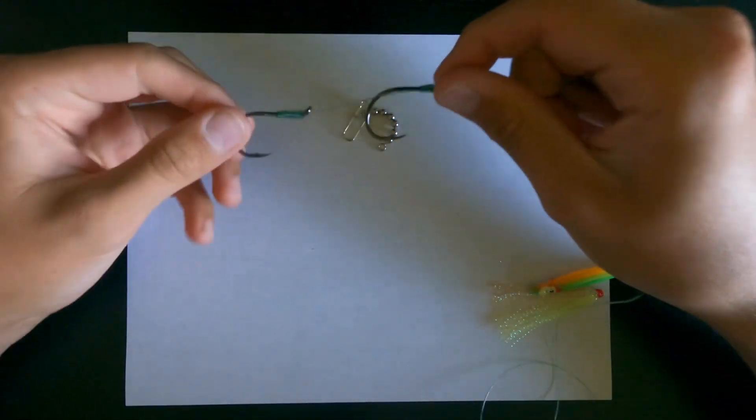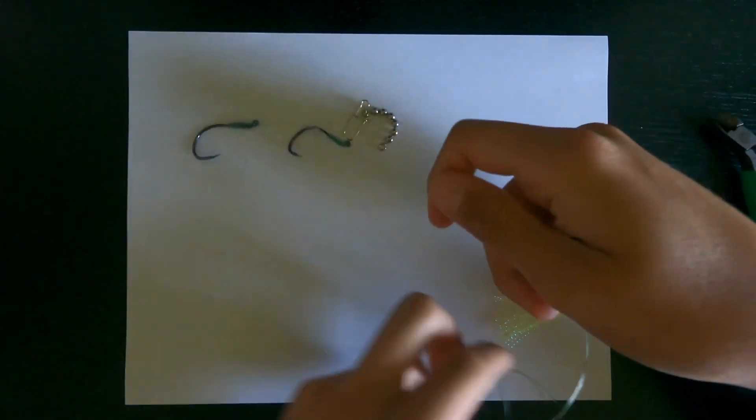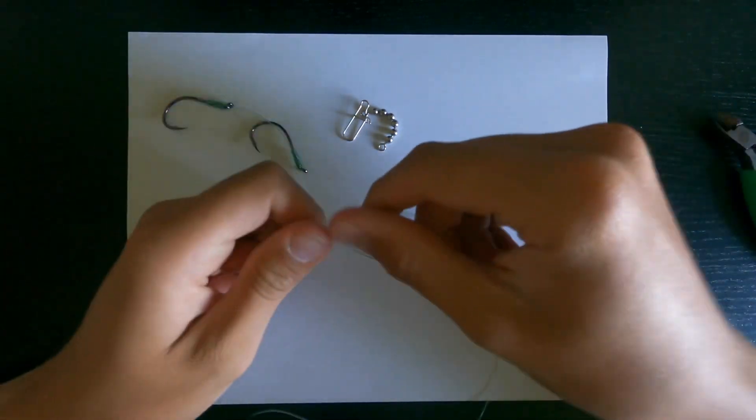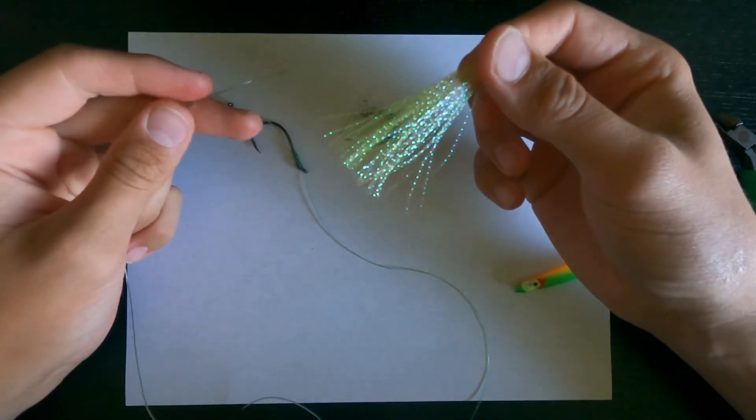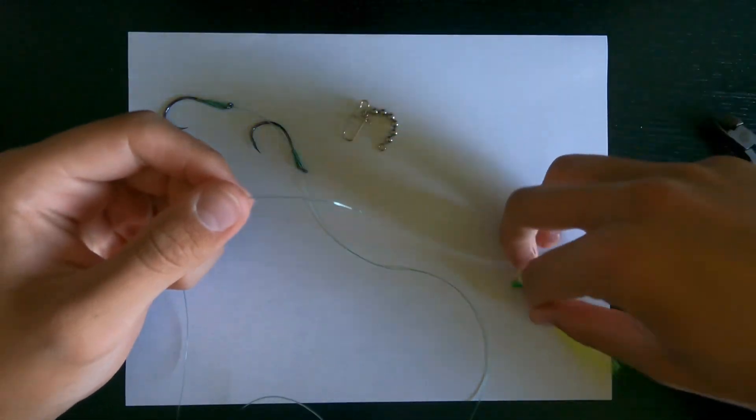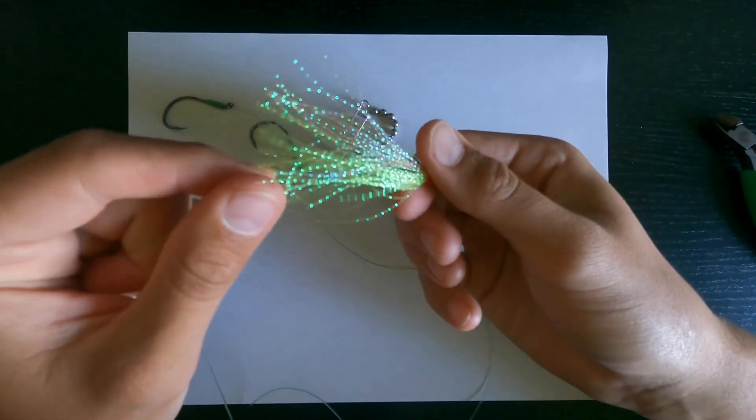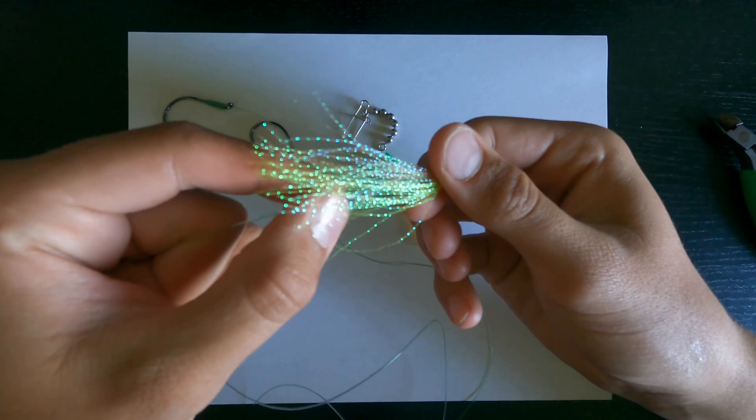So now you got two hooks on there, they're fixed, they're not going to slide. And the next step is you're going to take your P-Line tinsel skirt. They make all sorts of different colors in these, but this one's green and orange, so it's kind of going to match my hoochie. They make tons of colors in these. These are kind of tricky to get on sometimes.